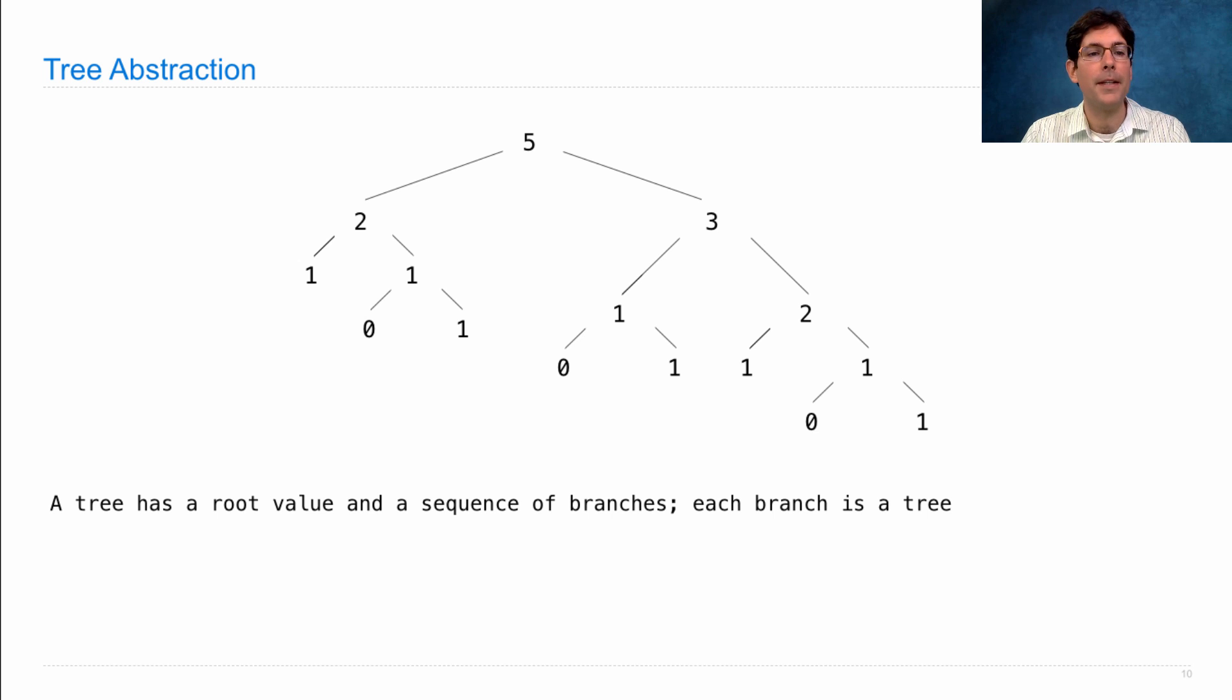A tree consists of a root value and a sequence of branches. Each branch is a tree. So you see a recursive definition here that a tree contains other trees. The root value in this case is 5. Here's one of the branches.